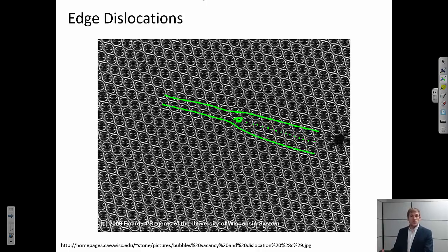Like I said, this is a two-dimensional representation, but if you can imagine the same thing in three dimensions, we would have a crystal lattice with an extra half a plane of atoms, and that edge that bounds that extra half a plane is called an edge dislocation.